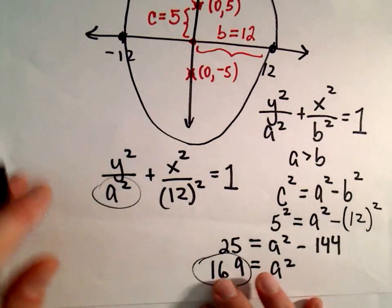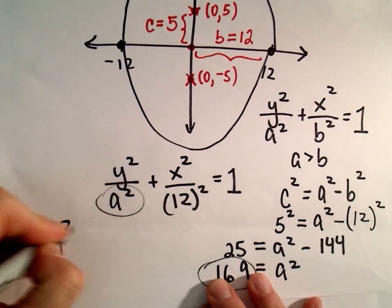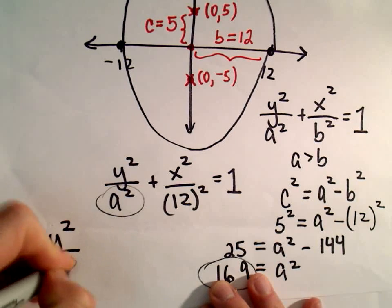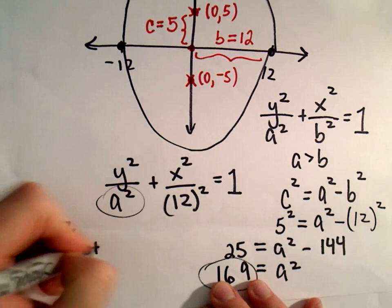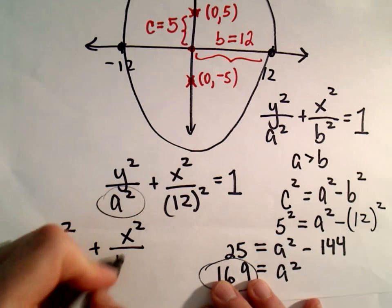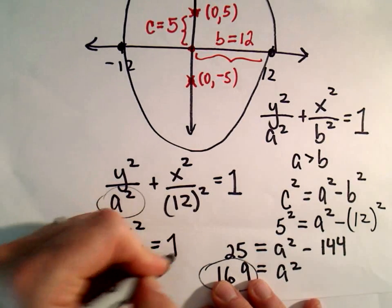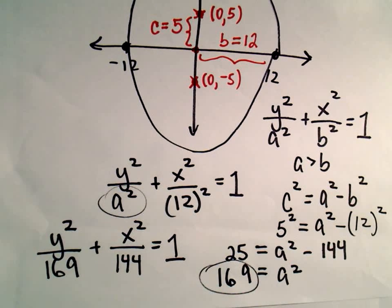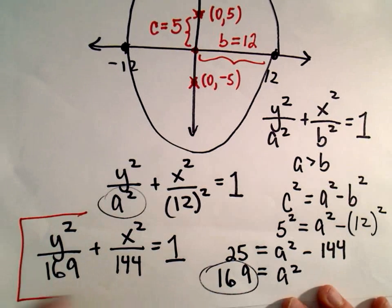So the equation of our ellipse will be y²/169 + x²/12², which is 144, equals positive 1. And now we have the equation of our ellipse.